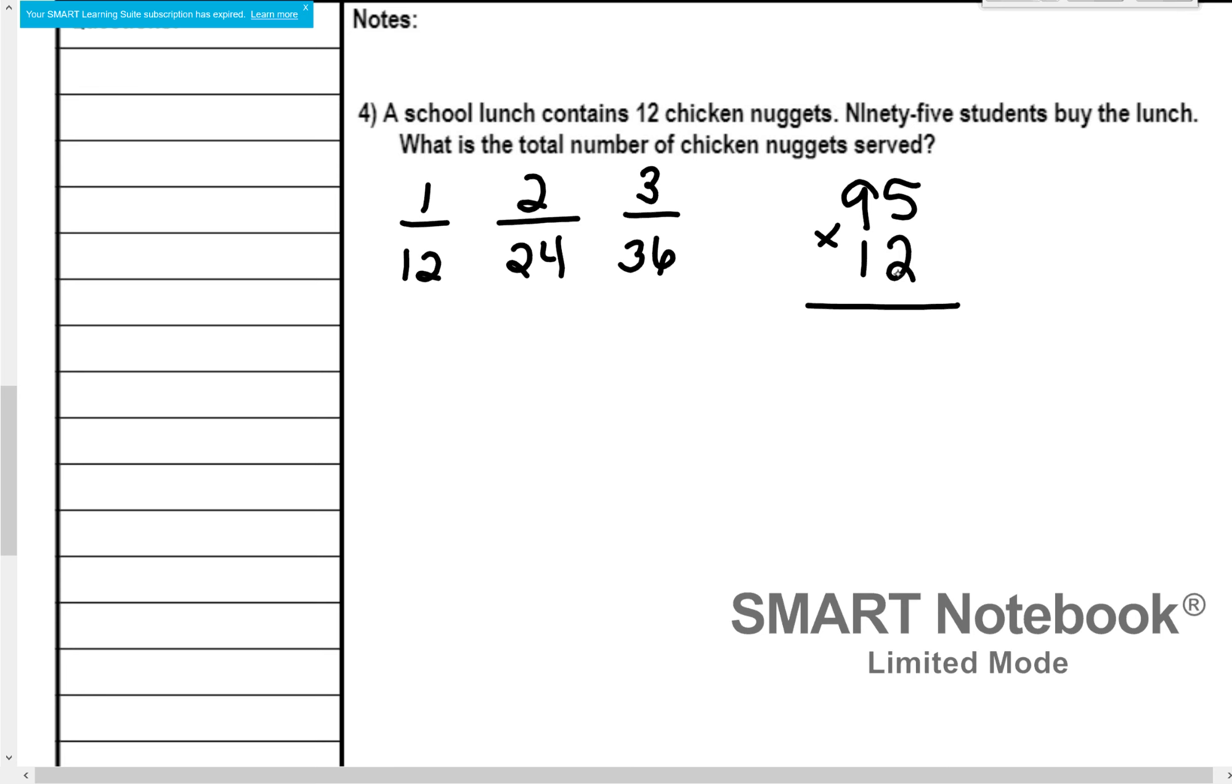Again, we are just going to solve, starting with that one. So 5 times 2 is 10. 2 times 9 is 18 plus 1 is 19. Now we're going to move on over to that 1, which is technically a 10, so we have to put in that 0 placeholder. So 1 times 5 is 5, and 1 times 9 is 9. Last step, since we are all out of digits, we are just going to add 0 plus 0 is 0. 9 plus 5 is 14. Carry that 1. 9 plus 1 is 10. Plus 1 is 11. 1, 2, 3. 1,140 chicken nuggets they would need.